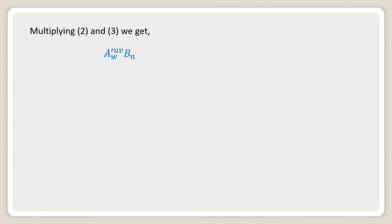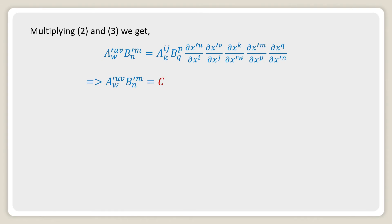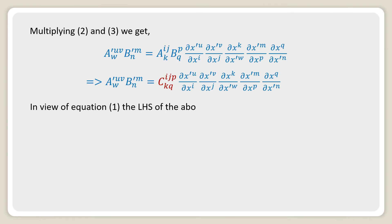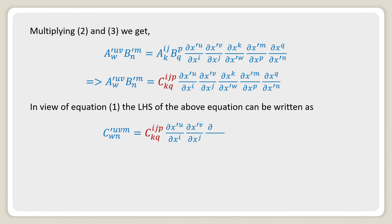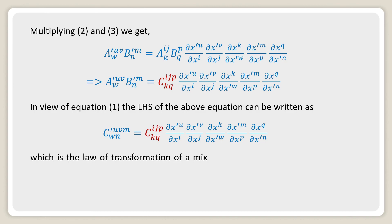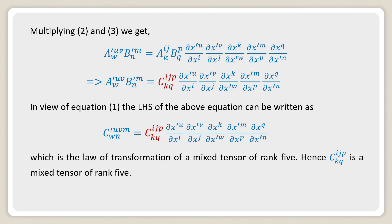Multiplying equations 2 and 3, we get A'^uvw · B'^mn = A^ij_k B^p_q (∂X'^u / ∂X^i)(∂X'^v / ∂X^j)(∂X^k / ∂X'^w)(∂X'^m / ∂X^p)(∂X^q / ∂X'^n). By using equation 1, the product A^ij_k B^p_q can be written as C^ijp_kq. Thus the left-hand side becomes C'^uvm_wn, which is the transformation law of a mixed tensor of rank 5. Hence, C^ijp_kq is a mixed tensor of rank 5. This proves our theorem.